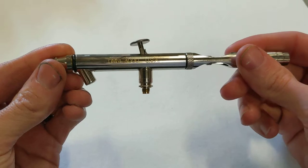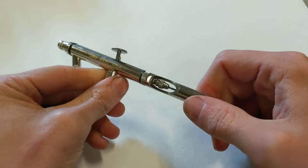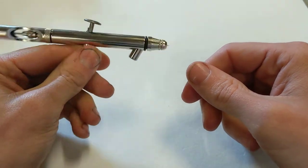This is the Omni 3000 airbrush. This is what we use on the website, this is my favorite airbrush, it's what I use every day. So we're going to take it apart, we're going to talk about it a little bit, and then we're going to put it back together.